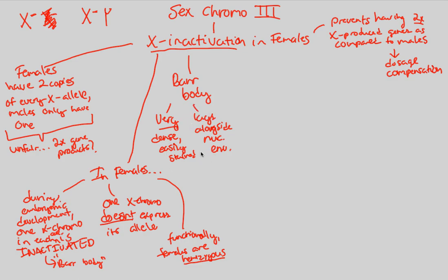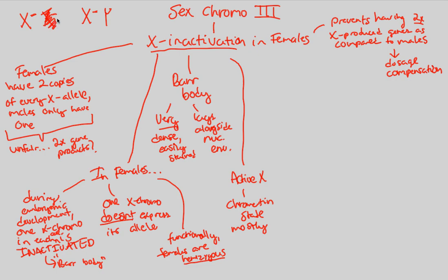So if you have a Barr body — imagine this is our Barr body, look how dense it is — next to it you have an active X. The active X, because it did not get inactivated, is in what is called a chromatin state, a true chromatin state, as opposed to this dense state. This dense state causes nothing on that chromosome to be expressed — none of the genes are expressed because it's so densely packed. Whereas the open chromatin state increases access to genes, thus increasing expression of genes.